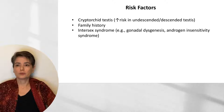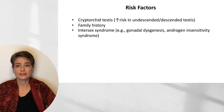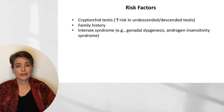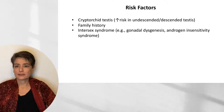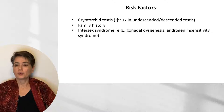There are multiple risk factors for germ cell tumors. The first is cryptorchid testis. Interestingly, the risk of malignancy is increased not only in the undescended, but also in the contralateral descended testis. Family history is also a known risk factor. Intersex syndromes, such as gonadal dysgenesis and androgen insensitivity syndrome, are also associated with an increased risk.